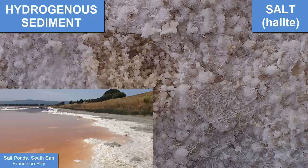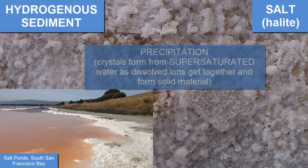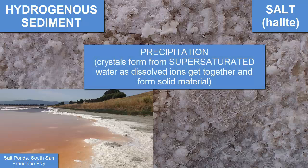Another type of sediment called hydrogenous represents minerals that are produced from ions that were originally dissolved in water — a process called precipitation. Seawater has many dissolved ions in it, and in numerous locations those ions reach a concentration higher than can be dissolved by the water, either because of evaporation or an influx of dissolved ions. We call that state supersaturated. We'll focus on where to find these precipitated hydrogenous sediments.